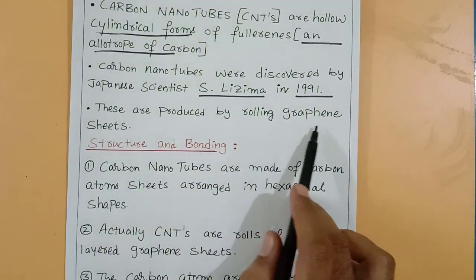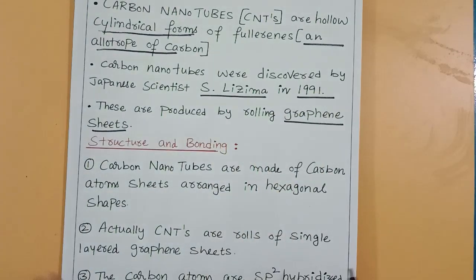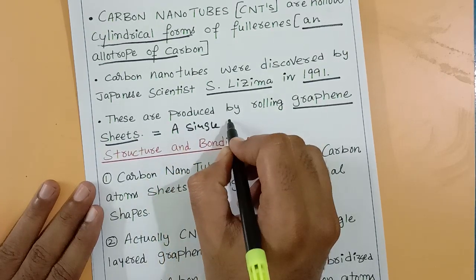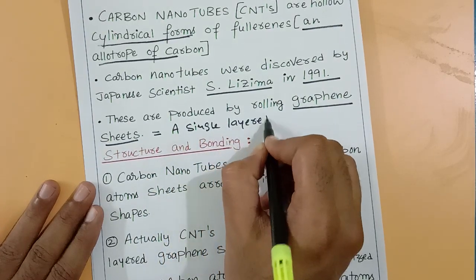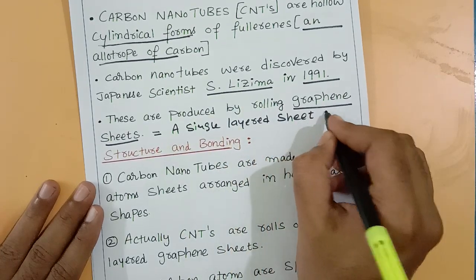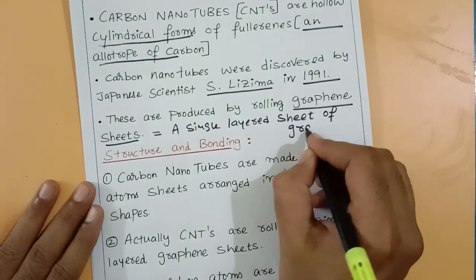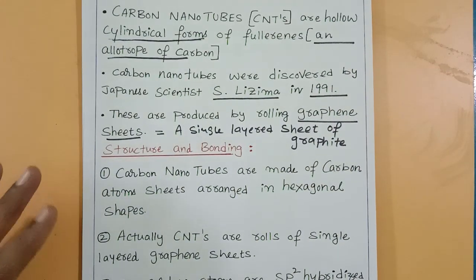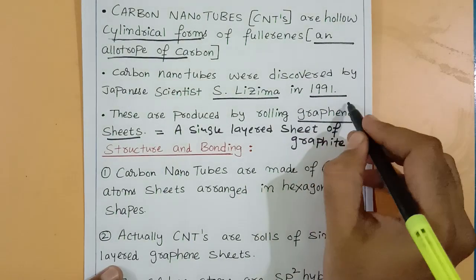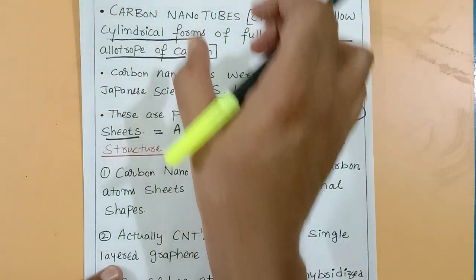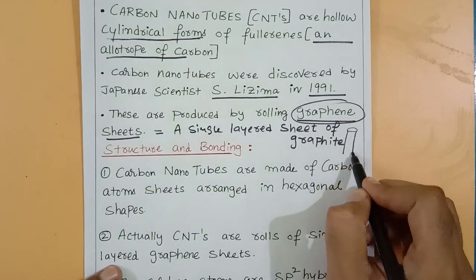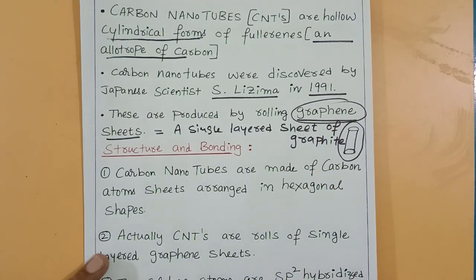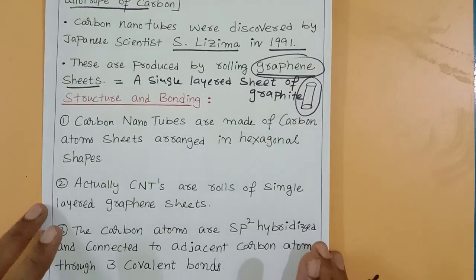Carbon nanotubes are produced by rolling graphene sheets. Graphene is a single layered sheet of graphite. In graphite, multiple layers are connected by van der Waals forces of attraction. When you roll one graphene sheet into a cylindrical form, you get carbon nanotubes — one cylindrical tube. That is the simple way to produce carbon nanotubes.